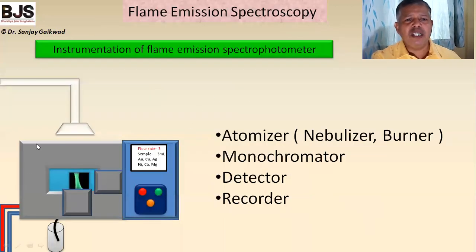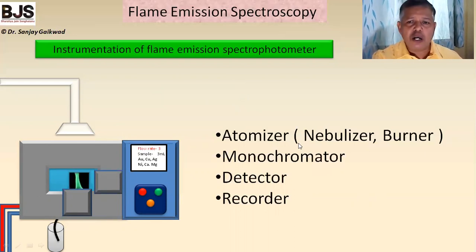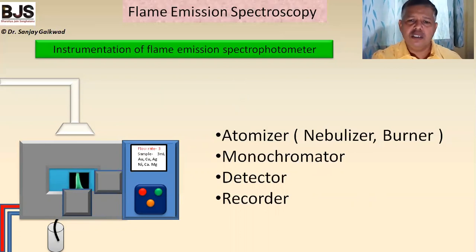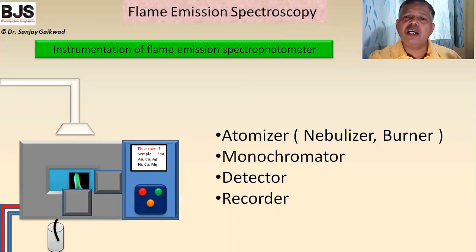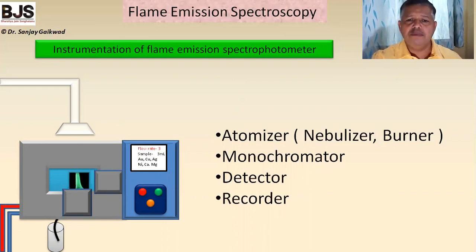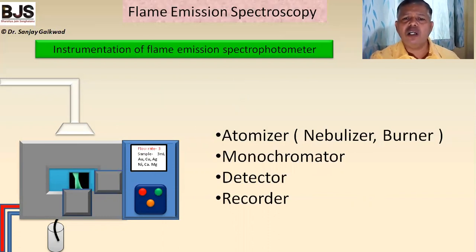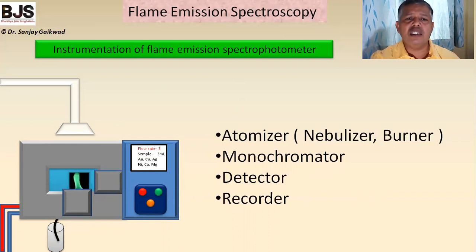The instrumentation is very similar to AAS, but instead of AAS there is no lamp here. The parts are: an atomizer containing the nebulizer and burner; a monochromator which may be a prism, grating, or simple filters — for example, to determine calcium we require a calcium filter; a detector such as a phototube, photovoltaic cell, or photomultiplier tube; and a recorder that directly records the intensity and wavelength of the emitted light.